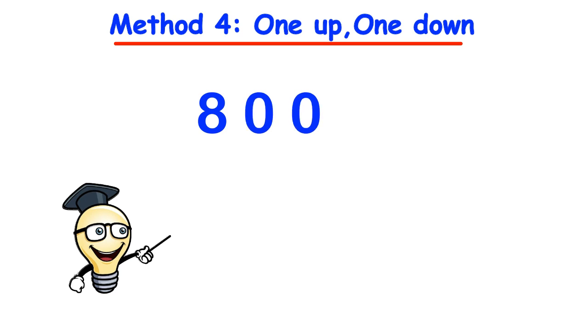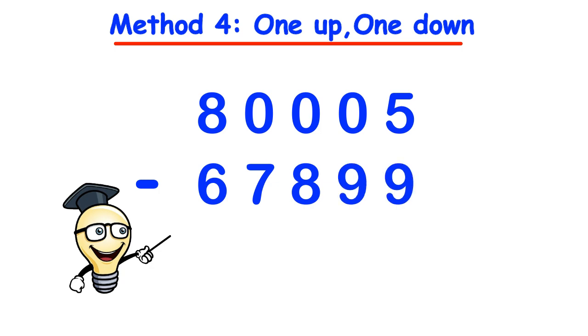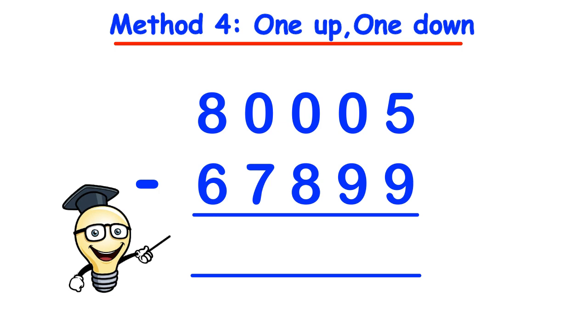What happens when we have 4 digits or more? For instance, if we have 80005 or 800005 take away 67899, it could take us a bit of time to work out what the bottom numbers should be rounded to. So what we can do instead is use the 1 up 1 down method, and we only use this method when the bottom digits are bigger than the top digits.